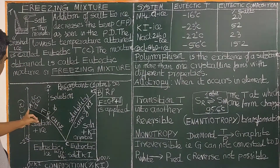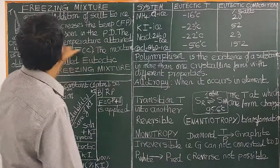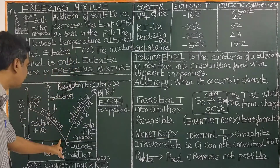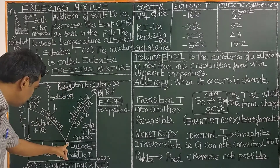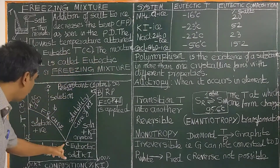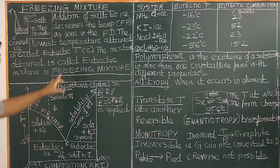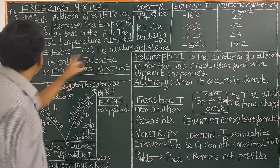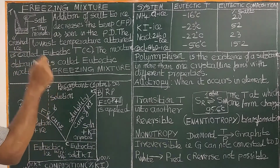On adding potassium iodide to ice, the temperature decreases. The lowest temperature attained is called the eutectic temperature, and this point is called the eutectic point. The mixture of salt and ice at this point is called the eutectic mixture, or freezing mixture.